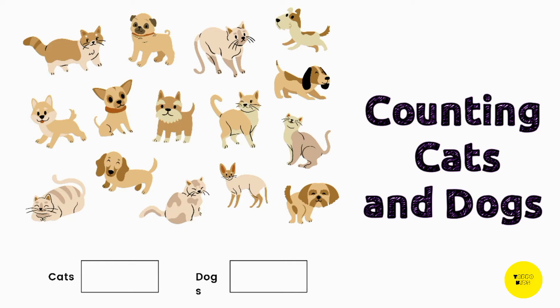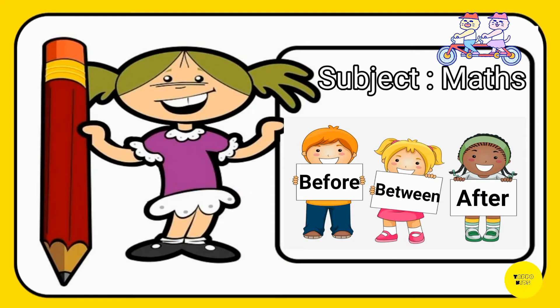There are 7 cats and 8 dogs. Our next chapter is Before, Between and After.